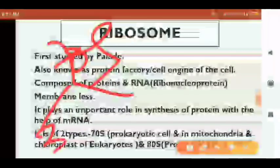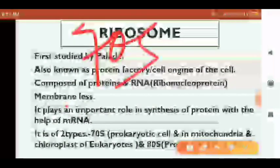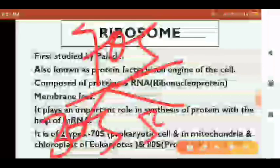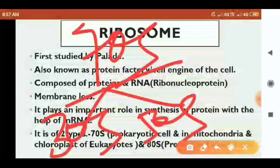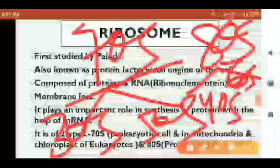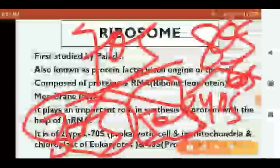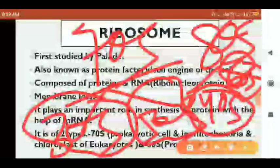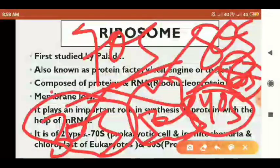The 70S ribosome has two subunits: a small subunit of 30S and a large subunit of 50S. The 80S ribosome has a small subunit of 40S and a large subunit of 60S. So 30S plus 50S gives 70S, and 40S plus 60S gives 80S.